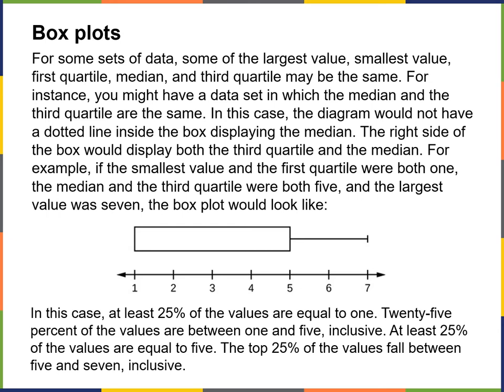For some sets of data, some of the largest value, smallest value, first quartile, median, and third quartile might be the same. For instance, if the median and the third quartile are the same, the diagram would not have a dotted line inside the box displaying the median — the right side of the box would display both. For example, if the smallest value and the first quartile were both 1, and the median and third quartile were both 5, and the largest value was 7, your box plot would look kind of strange — it would only have one whisker and be short and squatty.